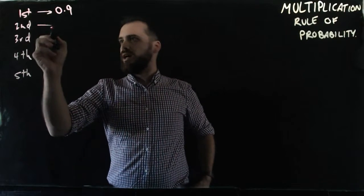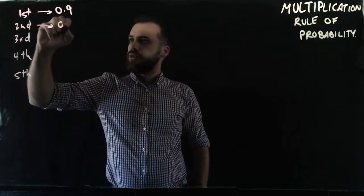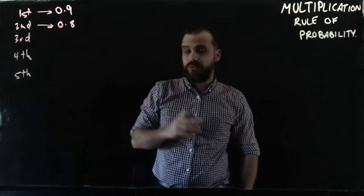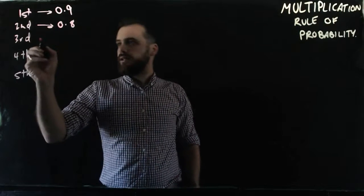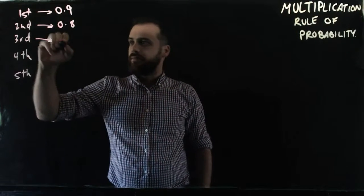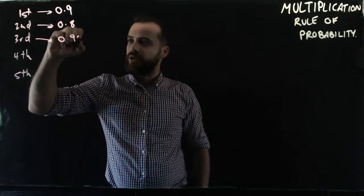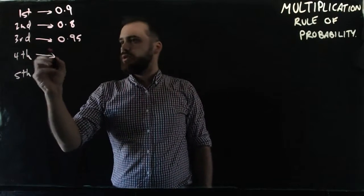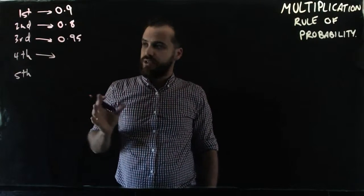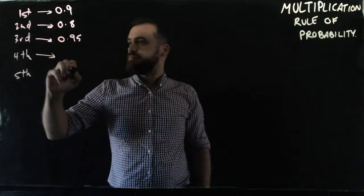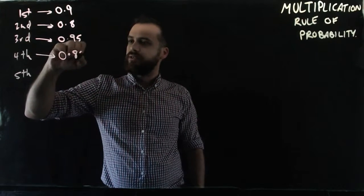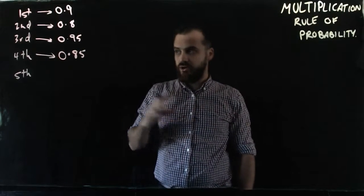Let's assume that we only have a 0.8 chance of winning in the seconds. Let's assume our thirds are almost unbeatable, and they have a 0.95 chance of winning. Let's assume our fourths have a 0.85 chance of winning.